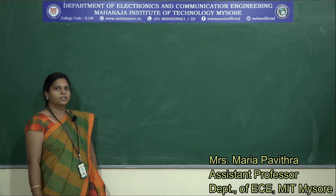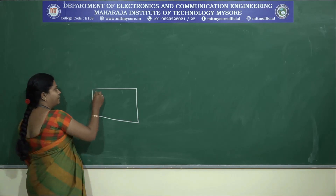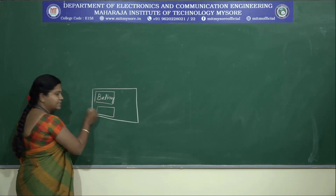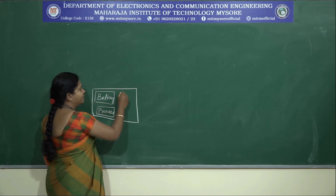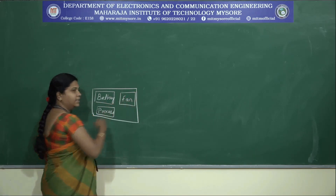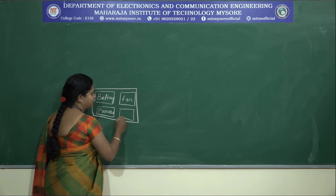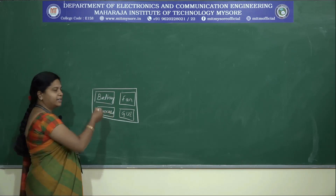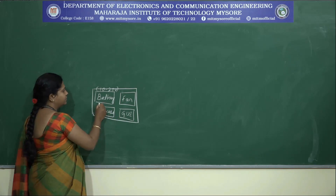Let us take an example of a laptop. We might have an idea of how the laptop's internal structure would be. The laptop will have a battery, and since it is a system, it will have a processor. We also know that laptops have a fan to cool the system and some graphic user interface GUI cards. The battery is around the range of 10 to 20 volts and the processor may range from 1.2 to 1.8 volts.